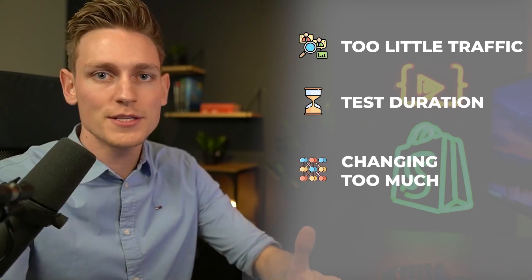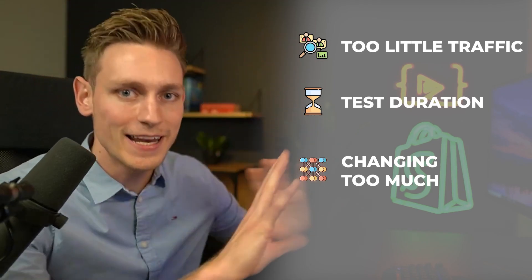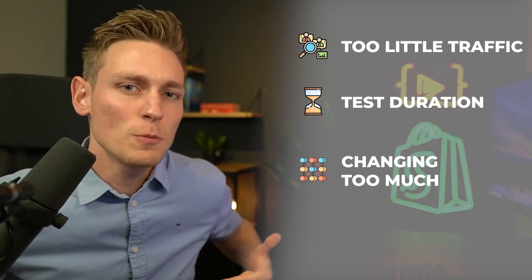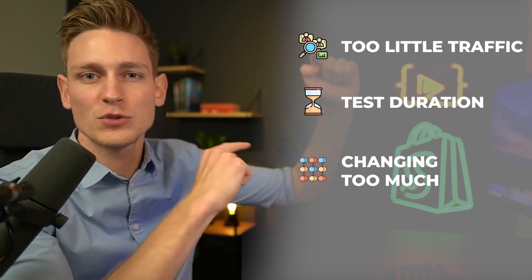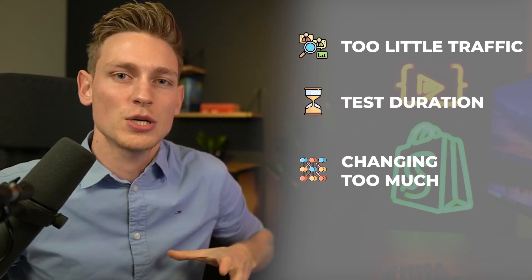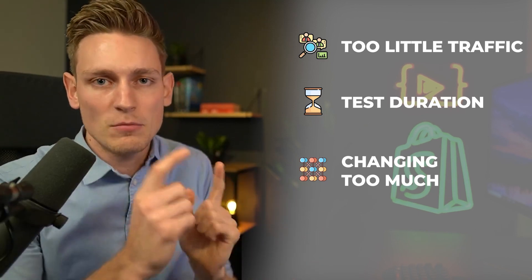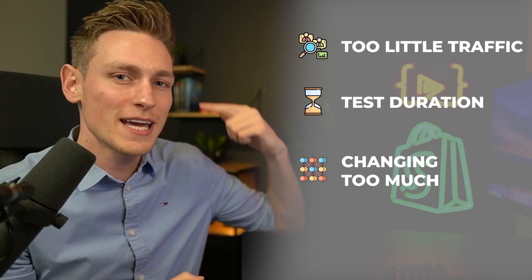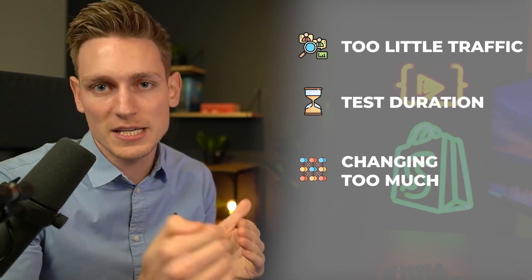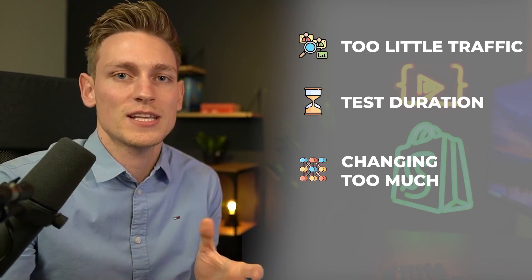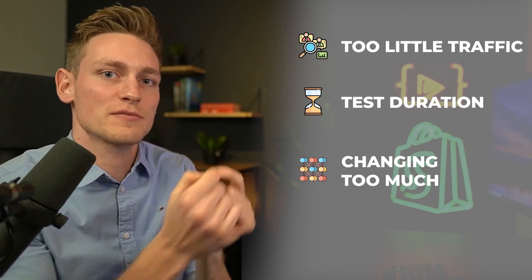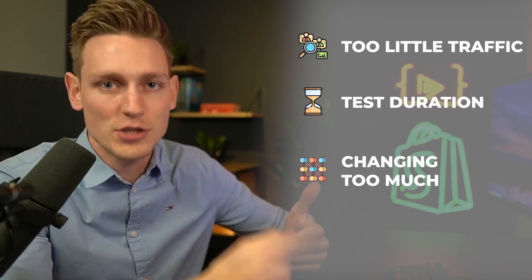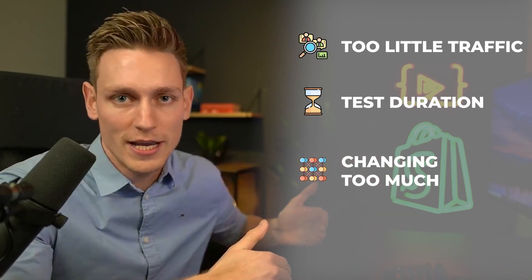A third common mistake is changing too much at once. If you change an entire landing page or 10 different elements at the same time, you won't be able to attribute the change in conversion rate to any one specific change. You can't draw specific learnings from that, but those learnings are very important — with every experiment you should get a bit smarter and make future experiments more reliable.